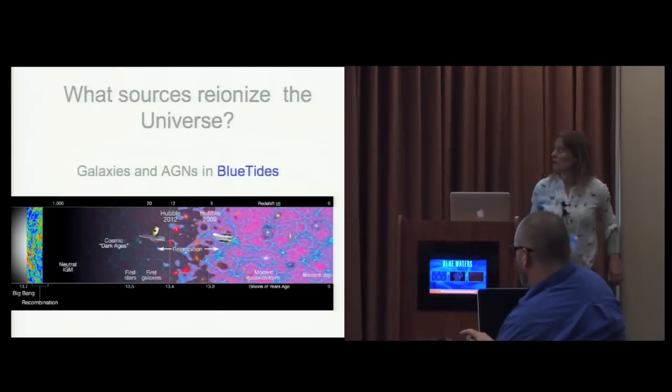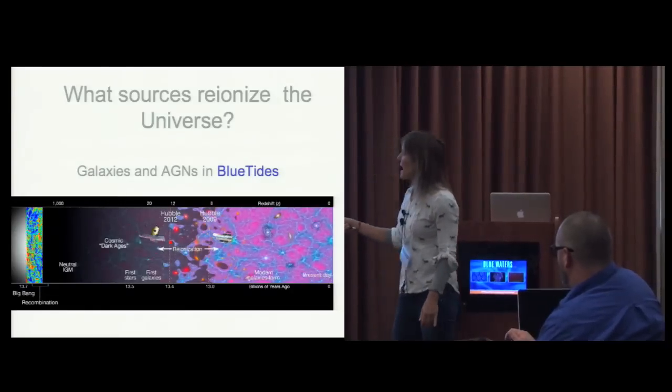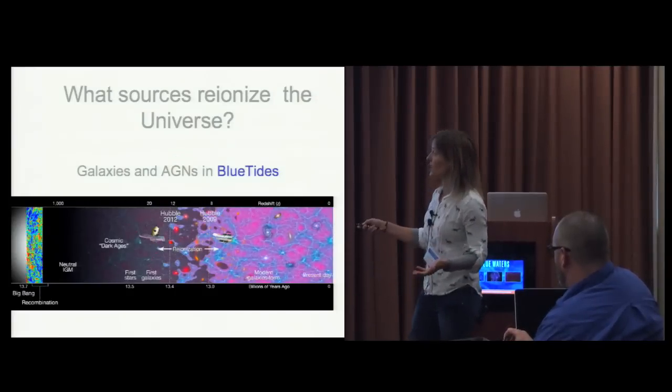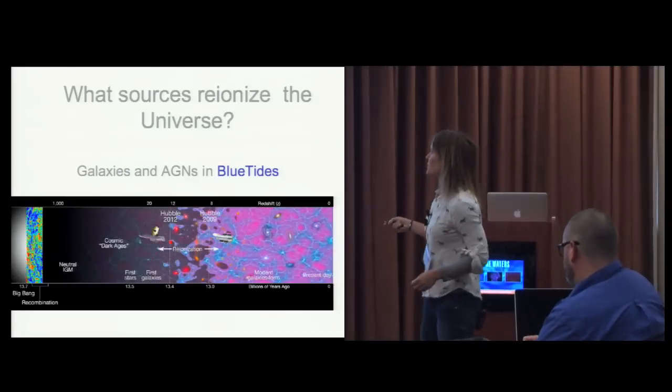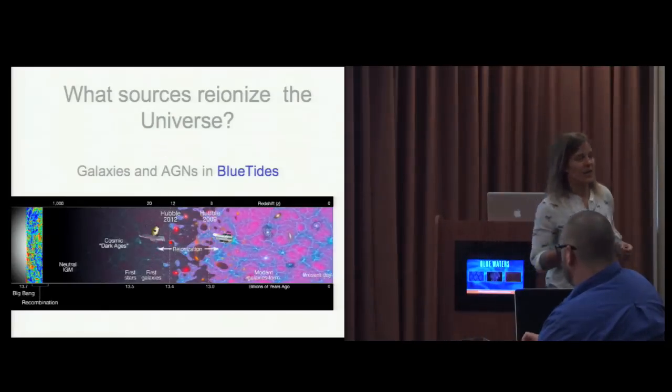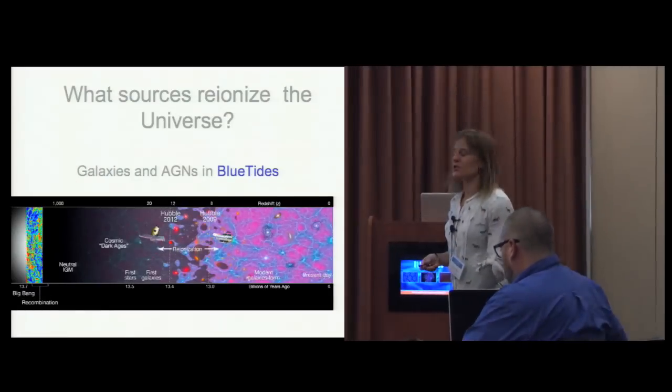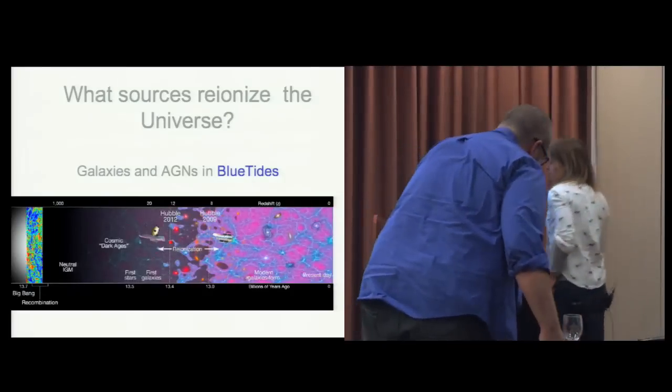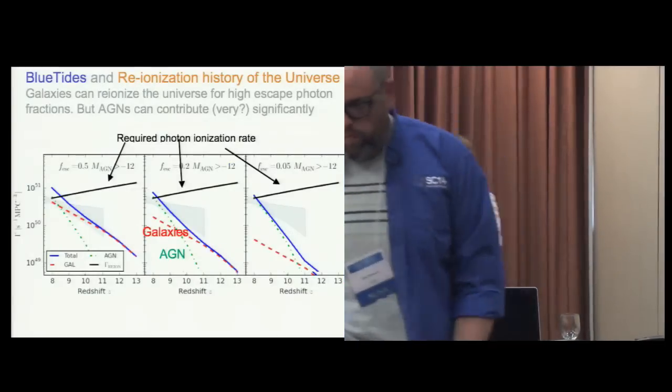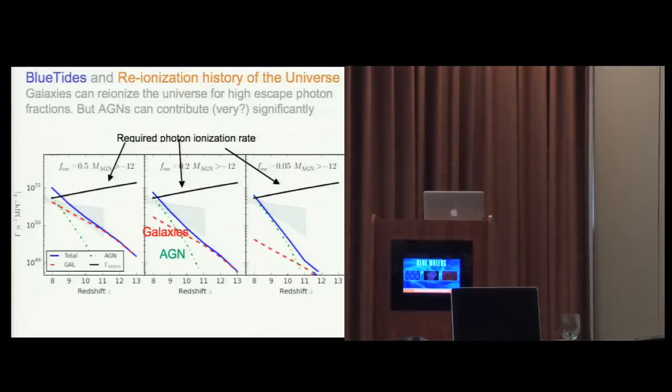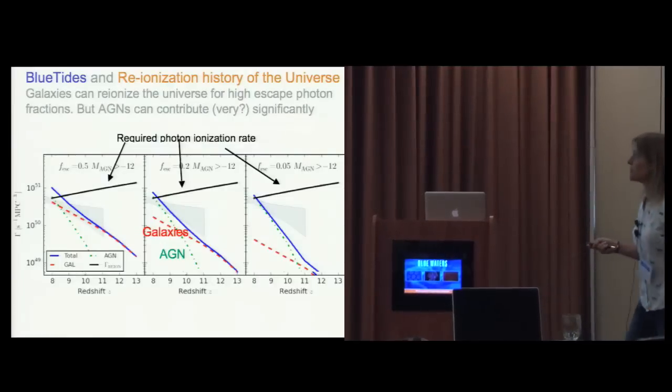These first galaxies are also responsible for what we call reionization of the universe. If we look here, we start with the Big Bang - the universe is completely dark and neutral. As the first galaxies switch on, they start lighting up this universe and their photons are actually able to ionize, reionize, the neutral hydrogen that is in there. This is the epoch of reionization that we are going to be studying with future surveys and we're starting to probe.